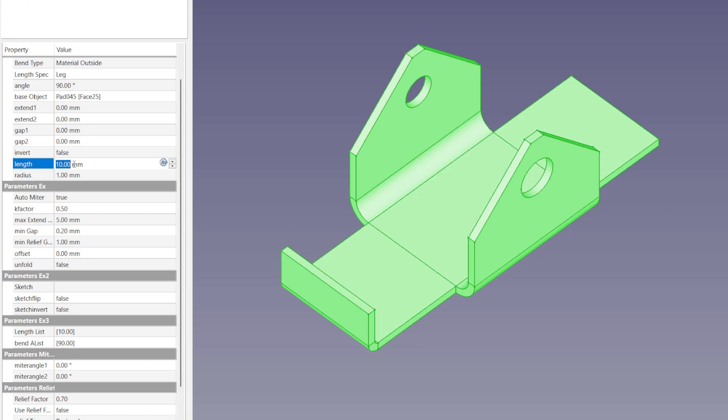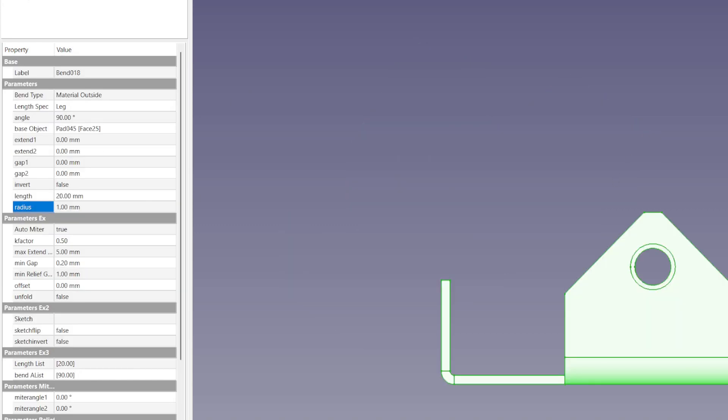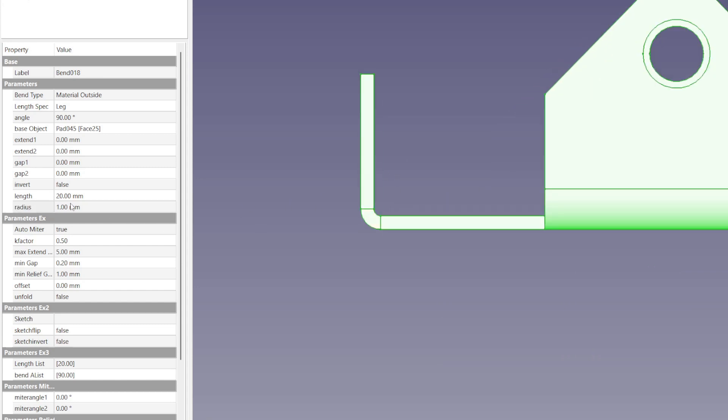When working on sheet metal, you always need the bend's radius to be larger than the thickness of your metal. Sometimes the radius should be twice as large. The larger the radius, the stronger the bend.